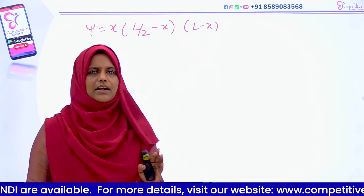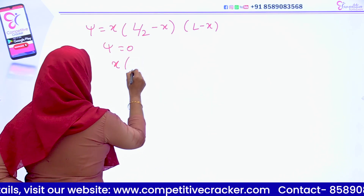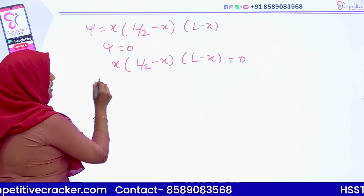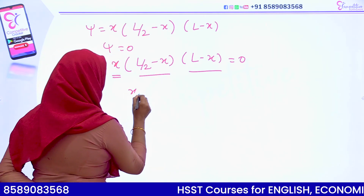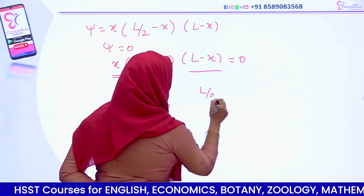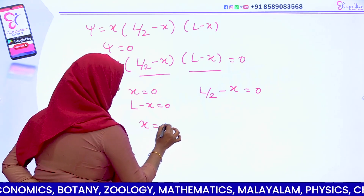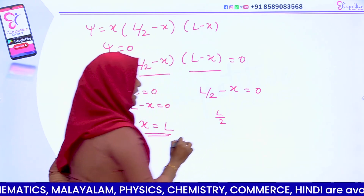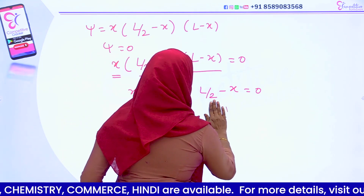We will have a node in this case. Simply, we will set psi equal to zero. So we set x into (L/2 minus x) into (L minus x) equal to zero. This gives either x equal to zero, or L/2 minus x equal to zero, or L minus x equal to zero. So x equals zero, x equals L, and x equals L/2.